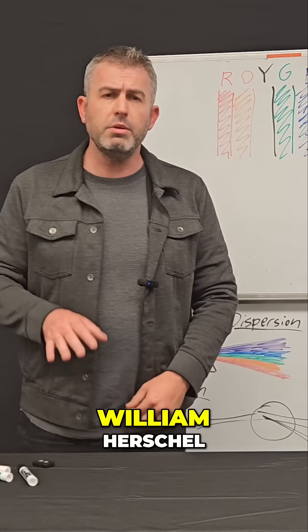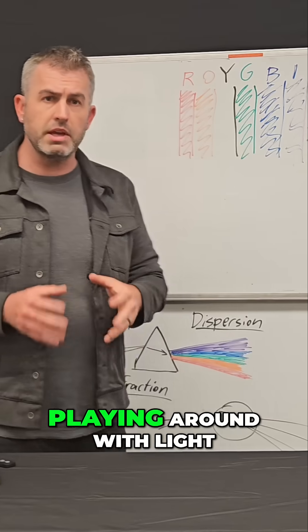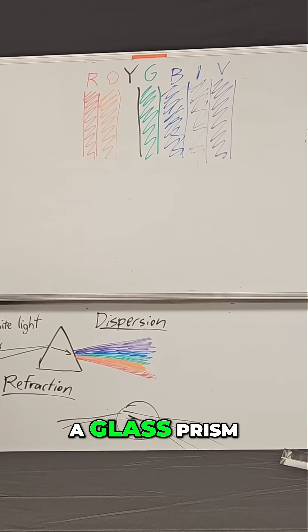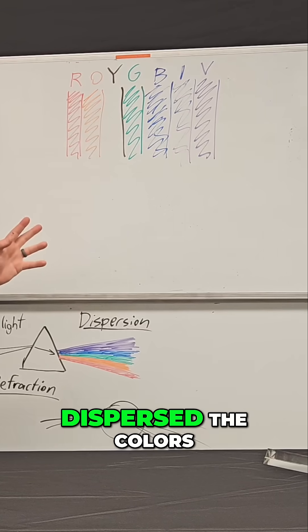So in the year 1800, William Herschel, another scientist who was playing around with light, did the same experiment. He passed white light through a glass prism. It all refracted and dispersed the colors.